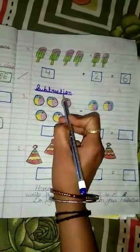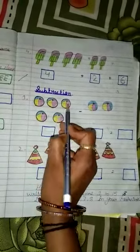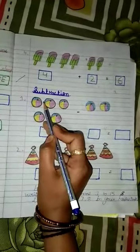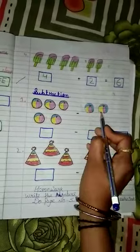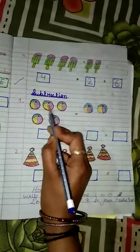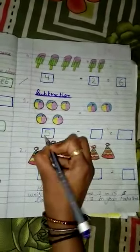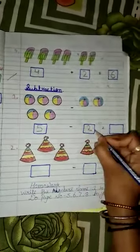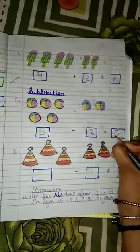Our next topic is subtraction. First, we count. 1, 2, 3, 4, 5. How many balls are there? There are 5 balls. And how many balls are there? There are 2 balls. 1, 2, 3, 4, 5. What should we write here? 5. And here? 2. So 5 minus 2 equal to what? 5 minus 2 equal to 3.